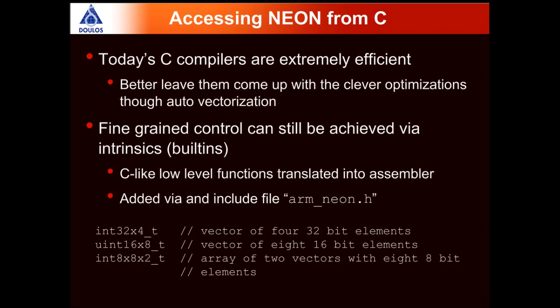A more suitable alternative to using assembly is to rely on sophisticated C compilers, which have a very good understanding of the core's structure and techniques. They can produce clever optimizations that might be difficult to achieve otherwise. Fine-grained control can still be achieved through intrinsics — C-like functions that rely on assembly code underneath. These are available through the arm_neon.h header file, which also provides additional data types for packaging vector values.